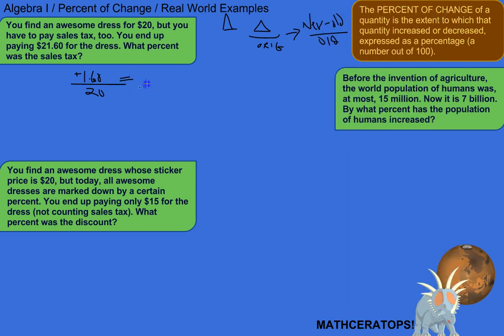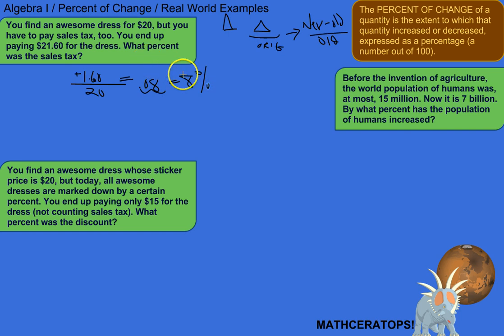To turn that into a percentage, you move the decimal over to the right two places, so that would actually be equivalent to eight percent. So the sales tax was eight percent, which bumped up the price of the dress by eight percent — or in this case, it was $1.60.